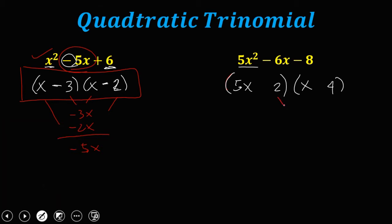Checking: 2 times x gives 2x, and 5x times 4 gives 20x. Our target middle term is negative 6x, but we cannot make negative 6x from this arrangement. So the current arrangement of 4 and 2 is wrong — we need to rearrange.